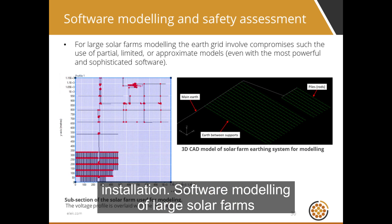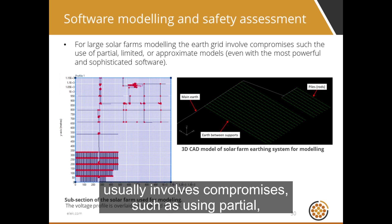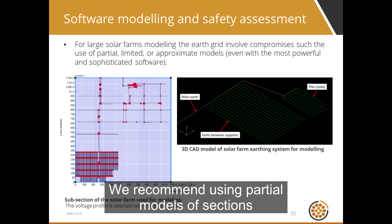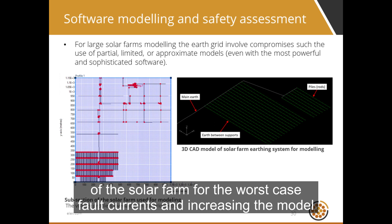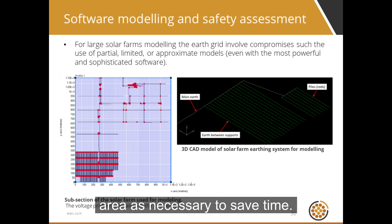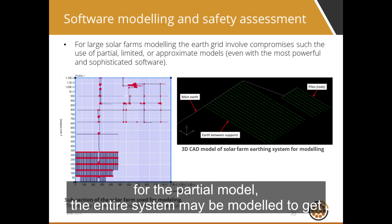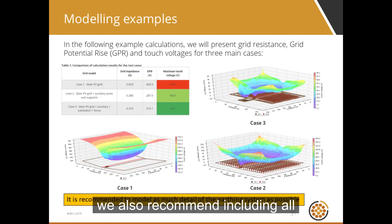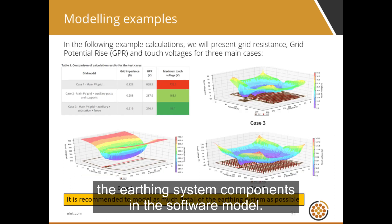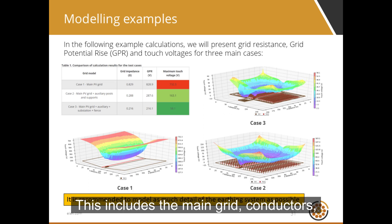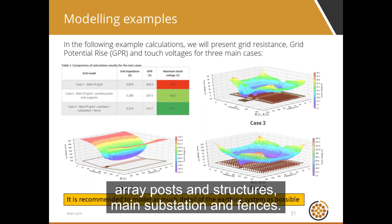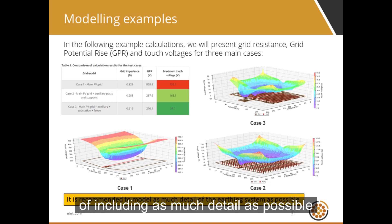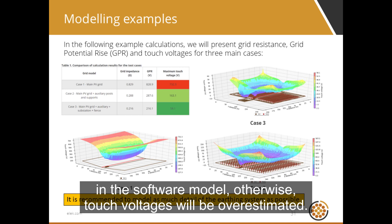Software modeling of large solar farms usually involves compromises such as using partial, limited, or approximate models — the standards recommend this. We recommend using partial models of sections of the solar farm for the worst-case fault currents and increasing the model area as necessary to save time. Once safety has been confirmed for the partial model, the entire system may be modeled to get the overall system performance, which should be better than that for the partial model. We also recommend including all earthing system components in the software model: main grid conductors, array posts and structures, main substation, and fences. The example shown here demonstrates the importance of including as much detail as possible in the software model — otherwise, touch voltages will be overestimated.